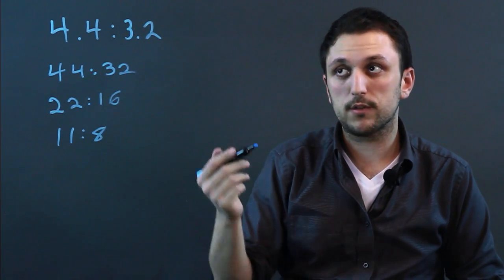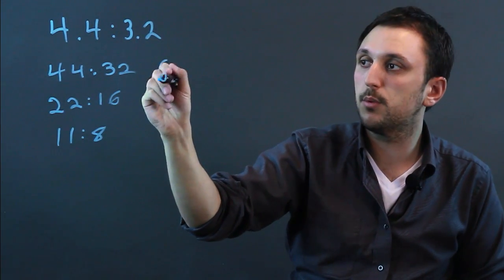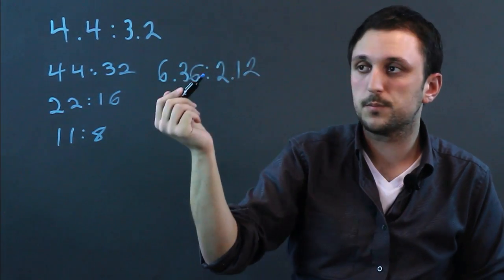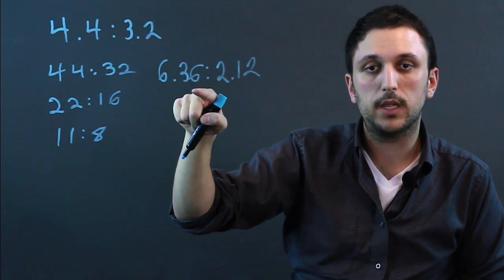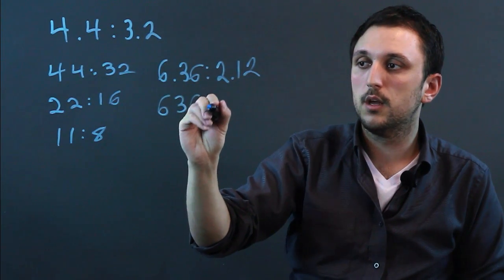If we have more decimal places, like, for example, if we said 6.36 to 2.12, well, now we're going into the hundredths place. We can multiply by 100. So 636 to 212.